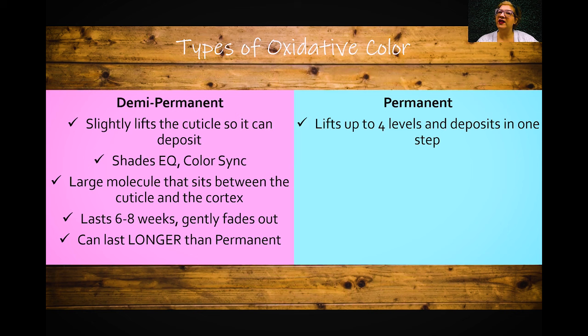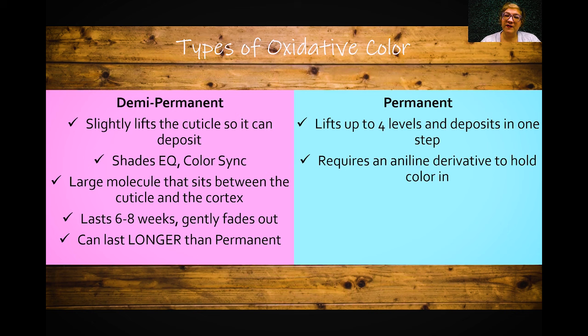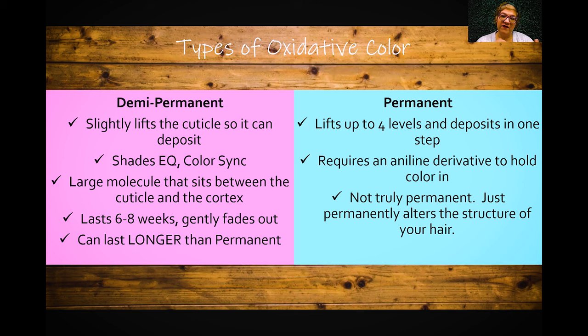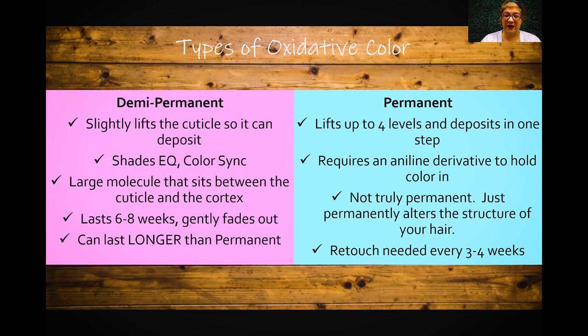Permanent color lifts up to four levels and deposits in one step. I'll say 'up to' many times when we talk about formulation because factors like hair structure, integrity, texture, and porosity all make a difference. It requires an aniline derivative to actually hold the color in — go watch my chemistry of hair color video for more on that. It's not truly permanent though; it just permanently alters the structure of the hair by breaking up pigment molecules and adding chemicals that attach to each other.